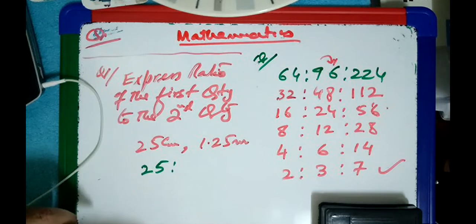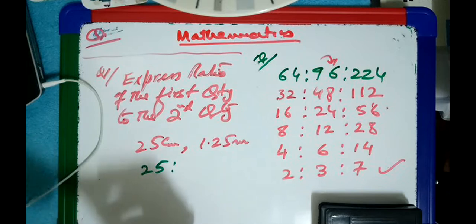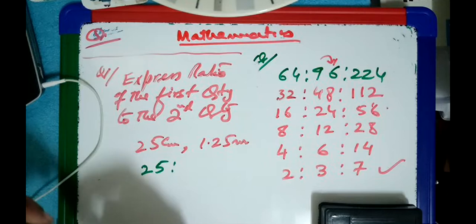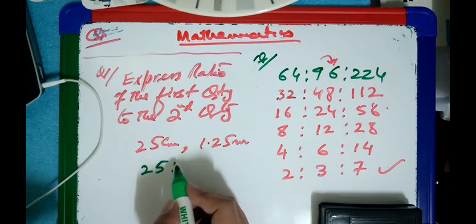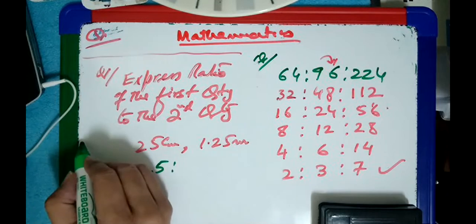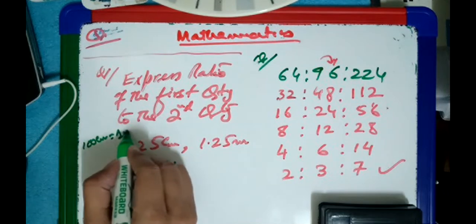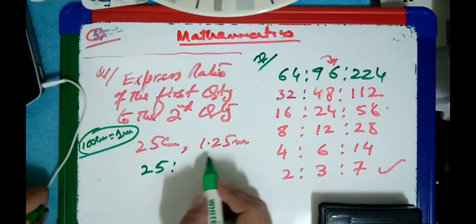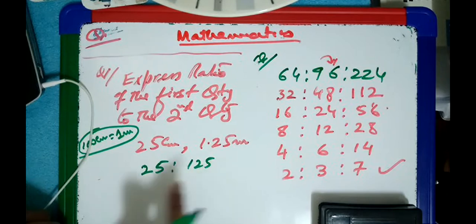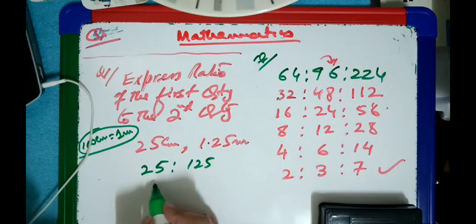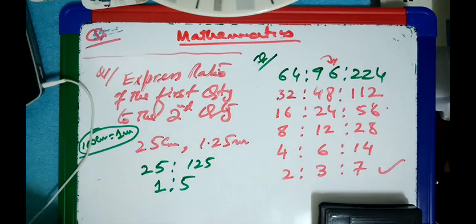Don't divide — multiply! Because it's meters, if you want to convert to centimeters, you multiply. 100 centimeters equals 1 meter. So multiply 1.25 by 100 and you get 125. Now you can divide both by 25 directly. 25 ones are 25, 25 fives are 125. So this is 5 times. The ratio is 1 is to 5.